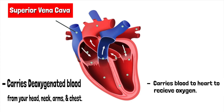The superior vena cava — it carries deoxygenated blood from your head, neck, arms, and chest, and it carries that blood to the heart to receive oxygen.